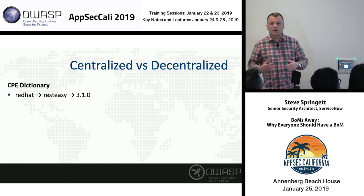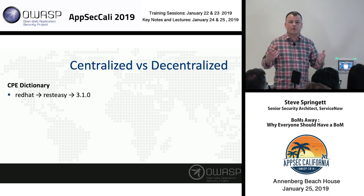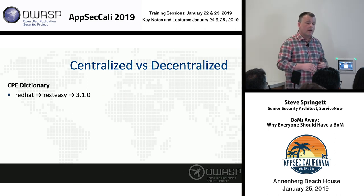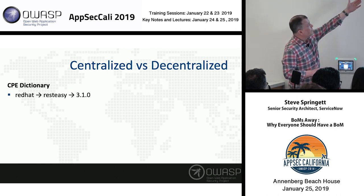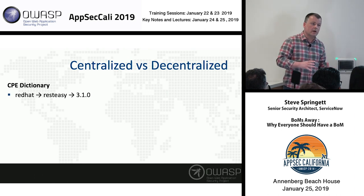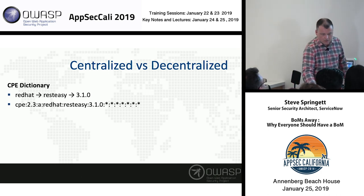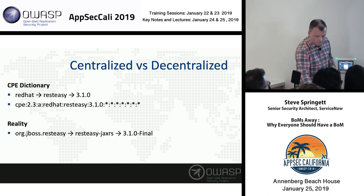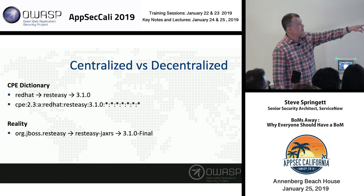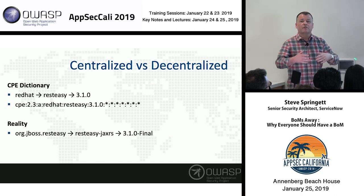One problem with automating vulnerability analysis is the centralized versus decentralized way to represent things. The open source community is exploding in number of components — Maven Central has a large number, but NPM has exponentially more. The NVD has the CPE dictionary — a centralized dictionary describing vendors, products, and versions. For example: Red Hat RESTEasy 3.1.0 is how the NVD might represent it. But in reality it's not Red Hat, it's org.jboss.resteasy; it's not RESTEasy, it's resteasy-jaxrs; and the version 3.1.0 is actually 3.1.0.Final. There are three fields and every single one of them is wrong. The NIST knows this — we're trying to replace CPEs, but it's a really hard problem.